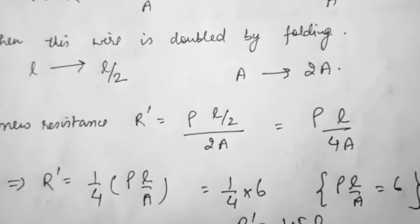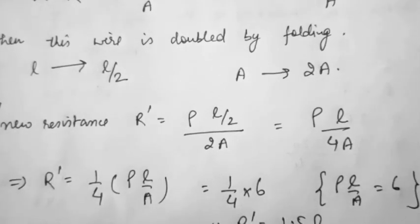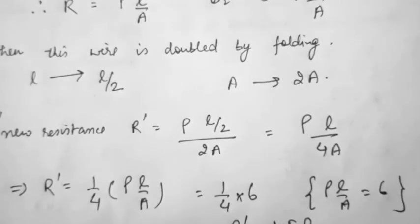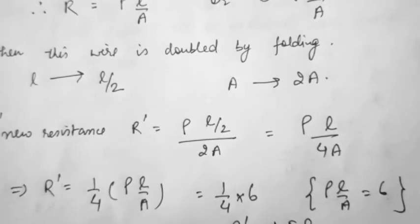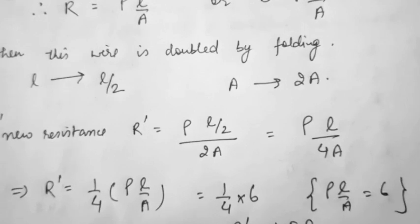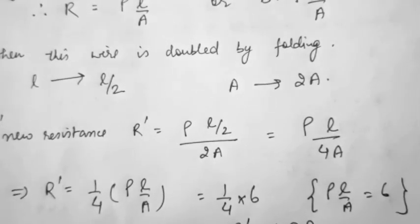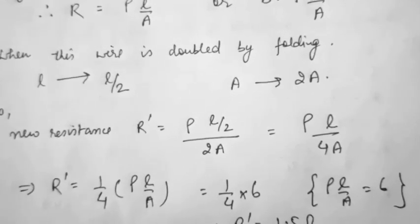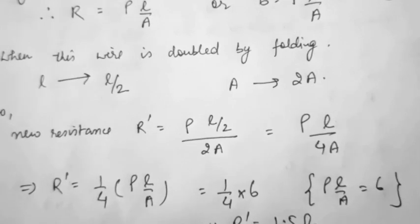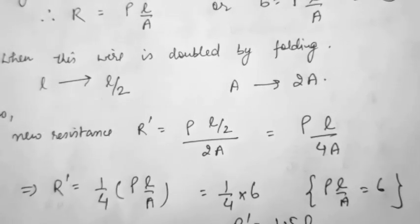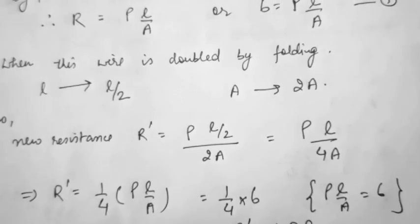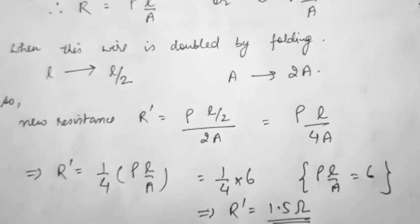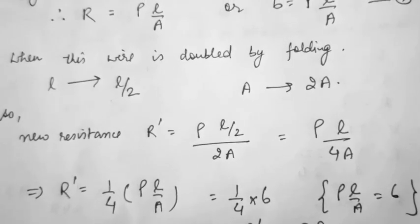Always remember, because such questions are very important for exams and competitions: length or cross section area can change in two ways — either by adding extra material, or if you have the same volume of material, you can double it or reduce the cross section area by stretching or folding the wire. We took L/2 and area 2A because the volume of material was not changing — the length becomes L/2 and area becomes 2A in the process.